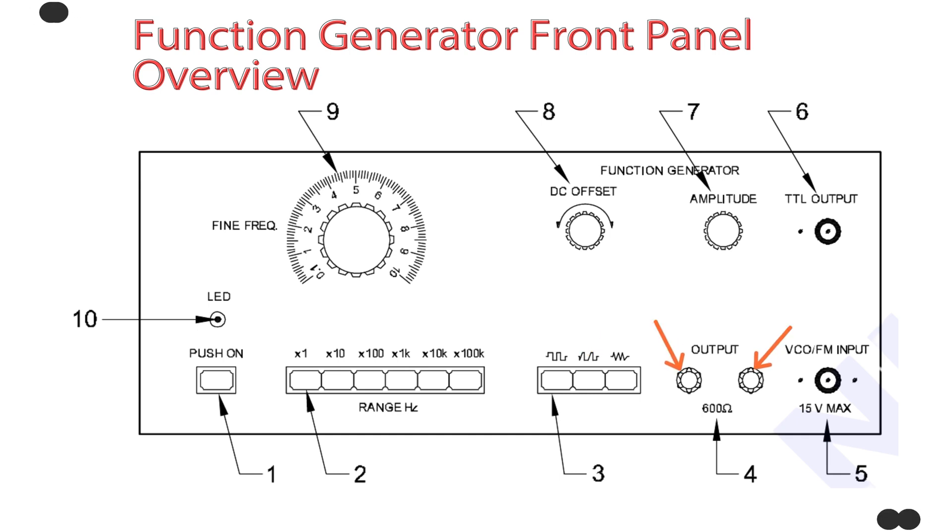Number four. Main output terminal. 600 ohms. Purpose: Delivers the selected waveform signal to external devices. Impedance: 600 ohms. Suitable for general test setups. Location: Center bottom.